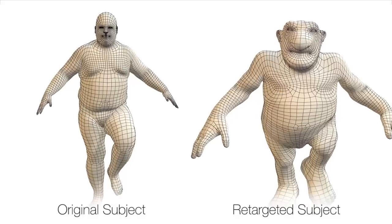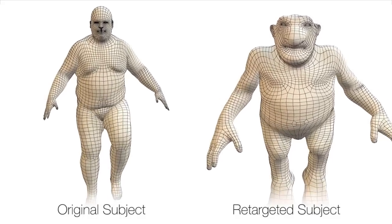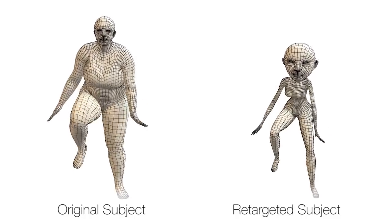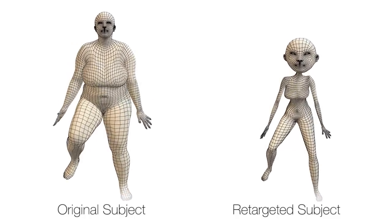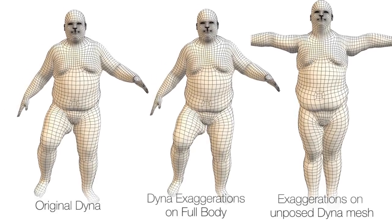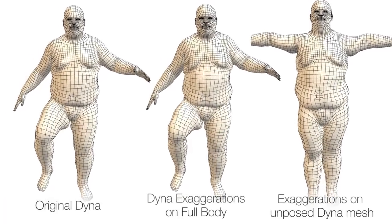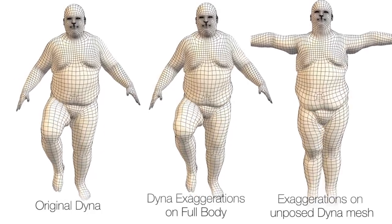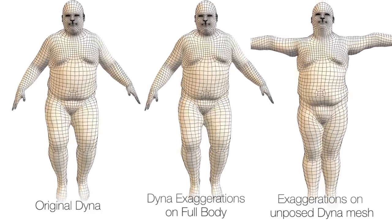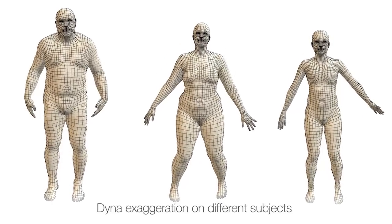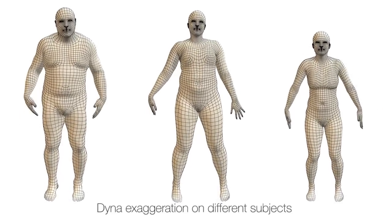We can also apply the deformations from a real person to a stylized character. The mesh has to be in alignment with our template, and then we simply use it in place of the basic SCAPE body. It is easy to exaggerate soft tissue dynamics by simply scaling the dynamic shape coefficients predicted by Dyna — here, we multiply them by a factor of 2.5. While exaggerated, the deformations remain plausible. We also exaggerate three new subjects by a factor of 2.